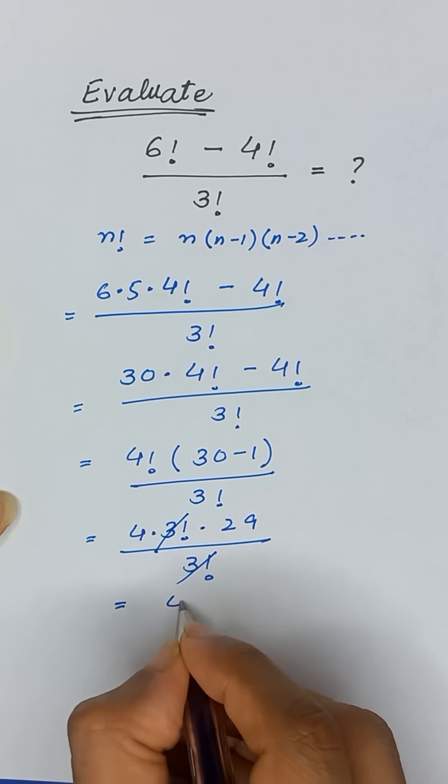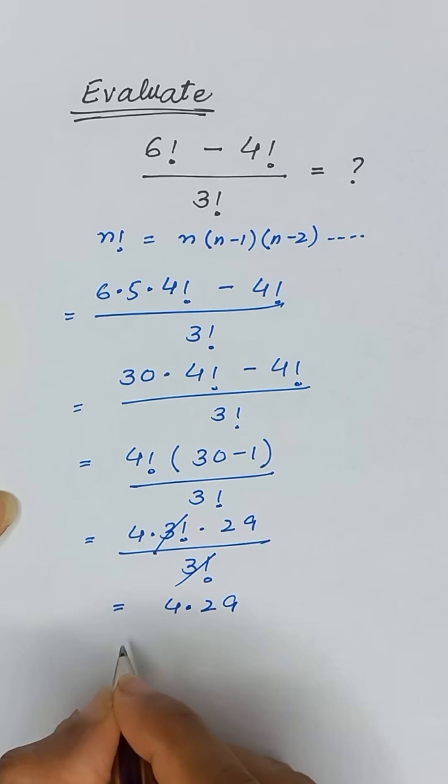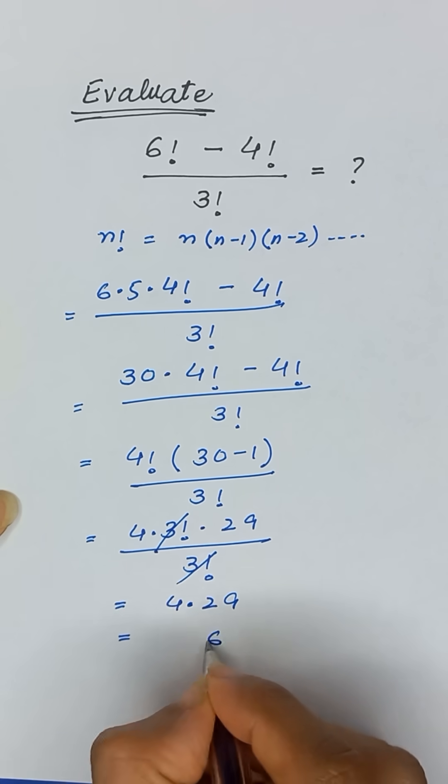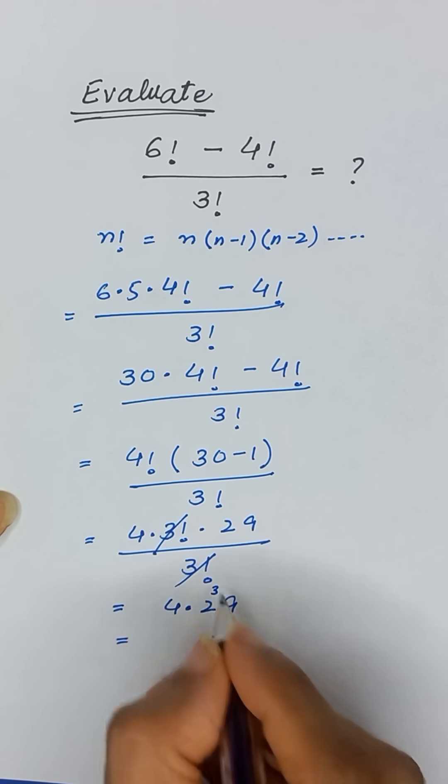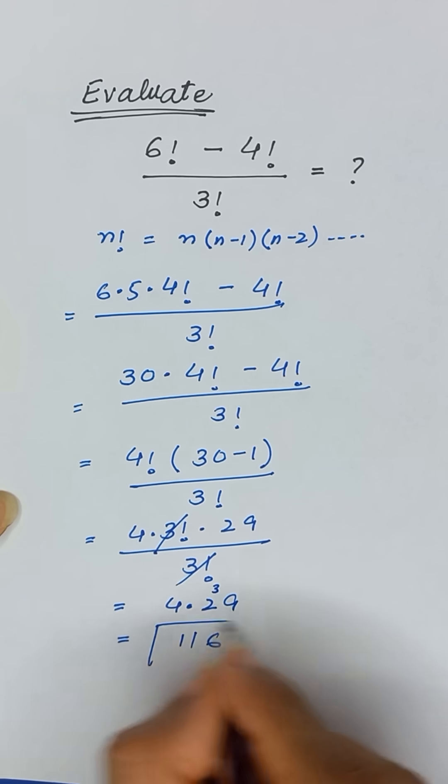And we have here 4 times 29, which will be equal to 116. 4 times 9 is 36, 4 times 2 is 8, so it will be 116.